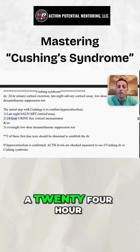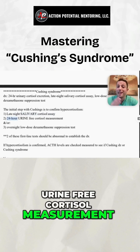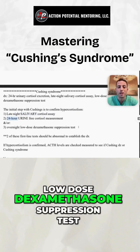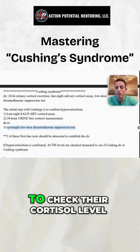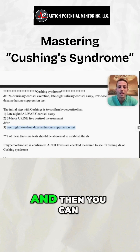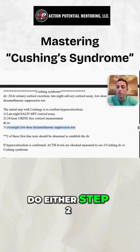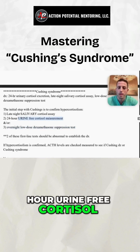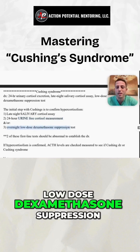Number two is a 24-hour urine-free cortisol measurement, and/or an overnight low-dose dexamethasone suppression test. You always want to first check their cortisol level to confirm hypercortisolism, and then you can do either the 24-hour urine-free cortisol measurement or the overnight low-dose dexamethasone suppression test.